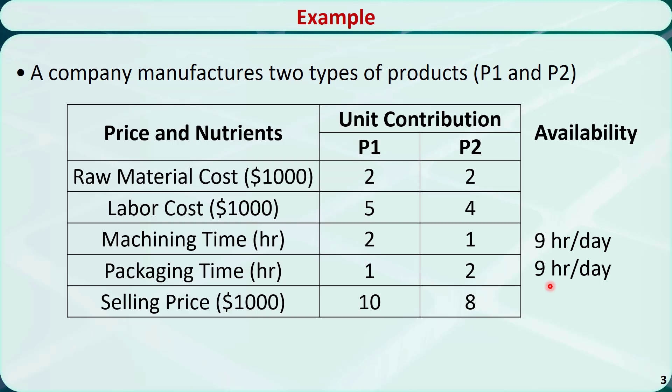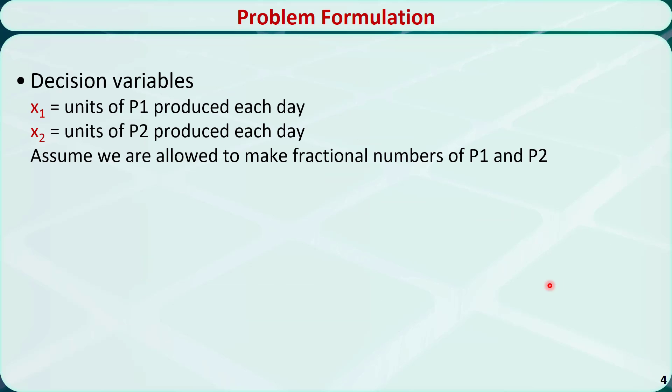To formulate the optimization problem, we need to identify three components: decision variables, the objective function, and the constraints. It is straightforward to define the decision variables for this problem. Let x1 be the units of P1 produced each day and x2 be the units of P2 produced each day. We assume x1 and x2 can take fractional numbers.